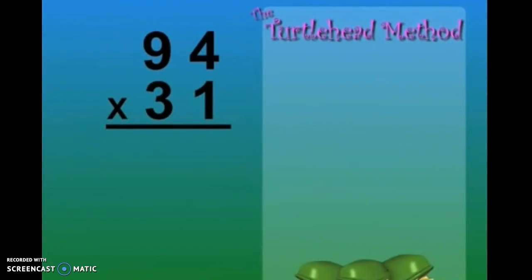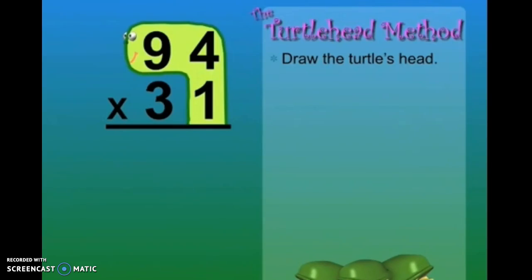Now let's multiply 94 times 31. First draw the turtle's head. Multiply by the number in its neck. 1.